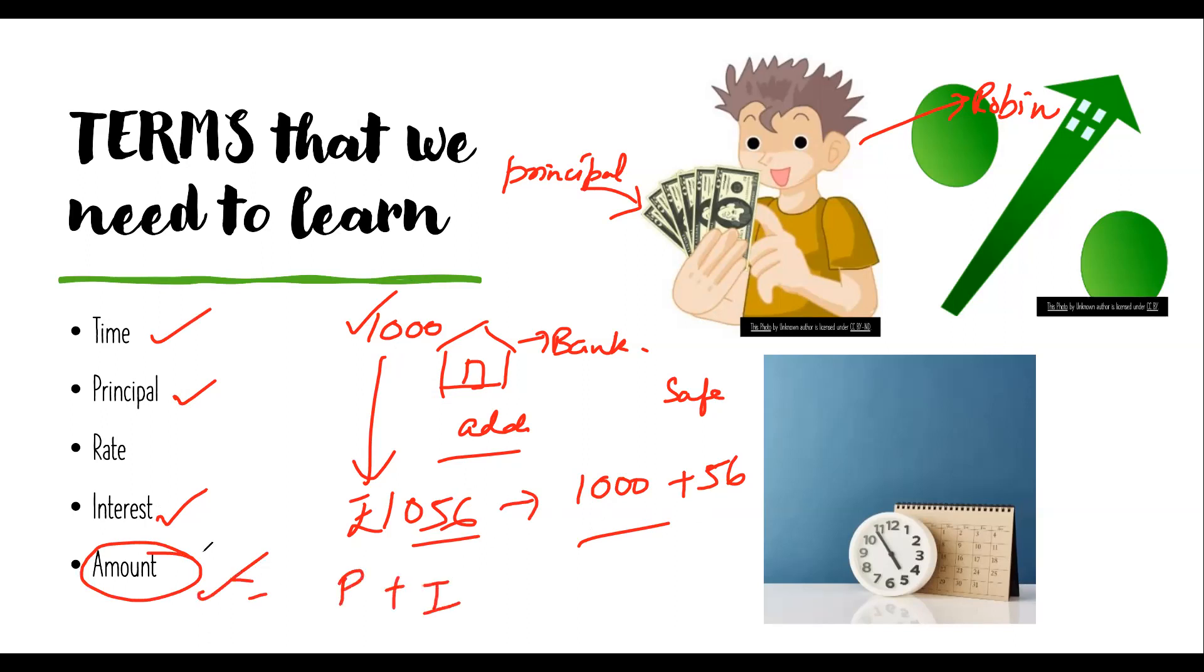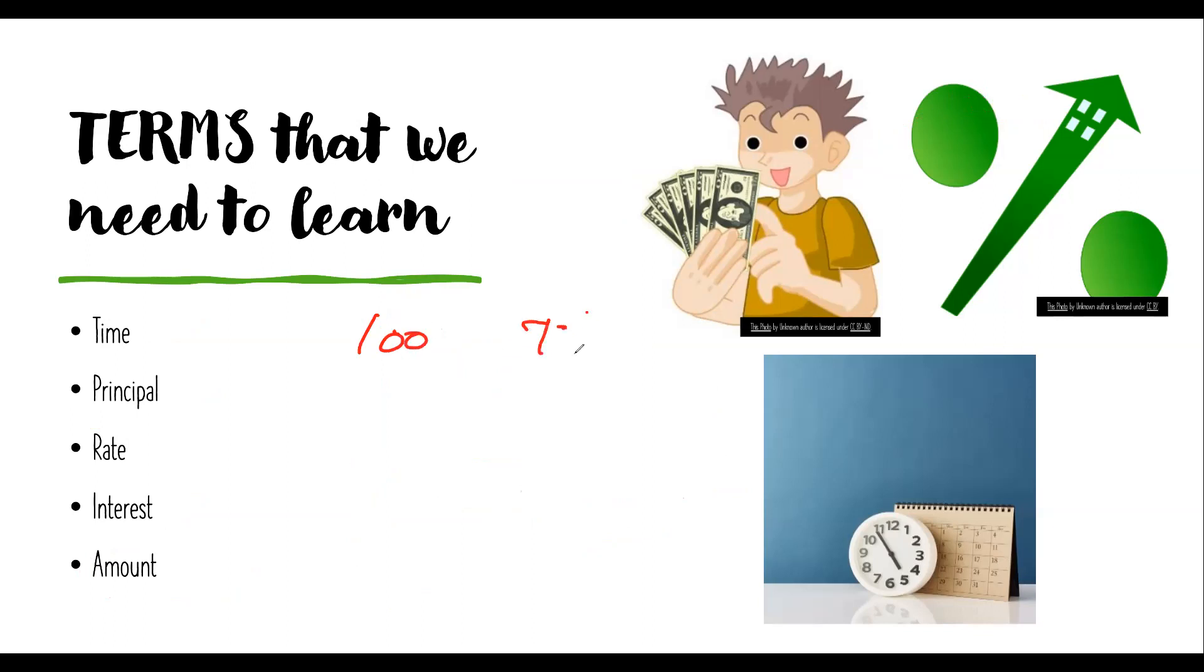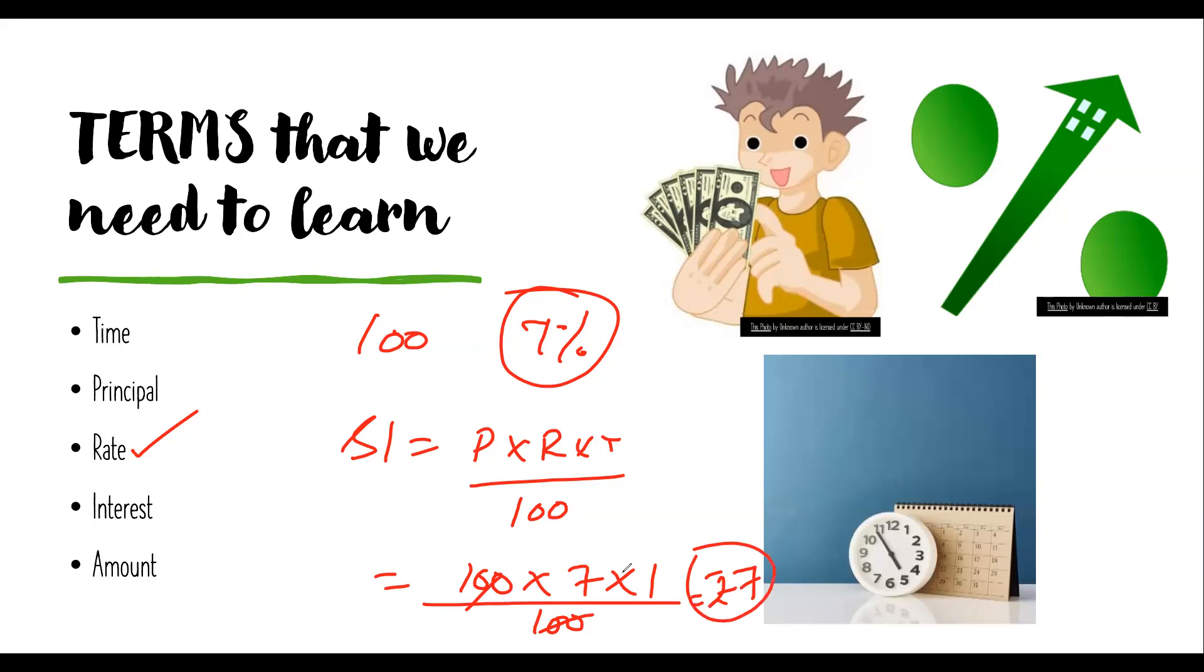Amount is principle plus interest. We left out rate. What is rate? Rate is depending on which you get your interest. Let's say we had 100 rupees and the bank says I'm going to give you 7% interest on this. So 7% is called rate. Now for this we have a simple formula which is SI = P × R × T / 100. It is a very basic formula: simple interest equals principle into rate into time upon 100.